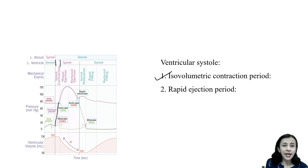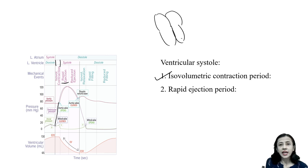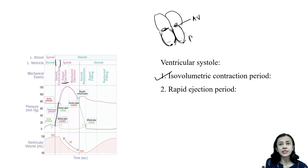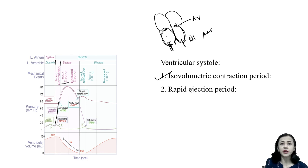Then comes rapid ejection. During isovolumetric contraction, both atrioventricular valves and the pulmonary and aortic semilunar valves are all closed. When the pressure inside the ventricle increases sufficiently, there is opening of the semilunar valves — pulmonary and aortic — and there is ejection of blood from the ventricle into the systemic vessels.